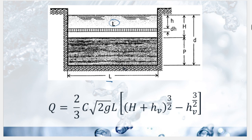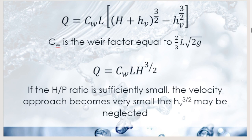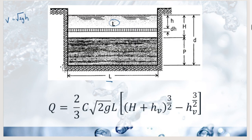Next is the triangular weir, also called the V-notch weir. These are used for very low heads where a rectangular weir may cause the nappe to adhere to the downstream face. The vertex angle typically ranges from 10° to 90°. The actual discharge formula is: Q = (4/15)·C·√(2g)·L·H^(3/2), derived from the rectangular weir formula adapted for the triangular shape.